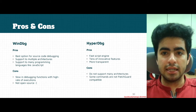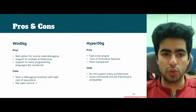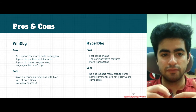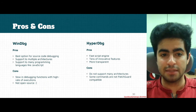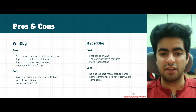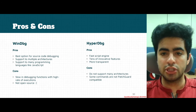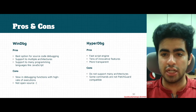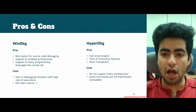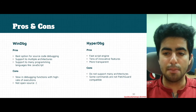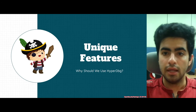In conclusion, the pros and cons: WinDBG is best for source code debugging, supports multiple architectures and many scripting languages like JavaScript. Its cons are that it's not open source and is slow when debugging functions with high execution rates. HyperDBG has a very fast script engine, tens of innovative features designed for reverse engineering, and is more transparent than WinDBG. Its cons are limited architecture support — only Intel processors currently — and some commands are not compatible with patched code.